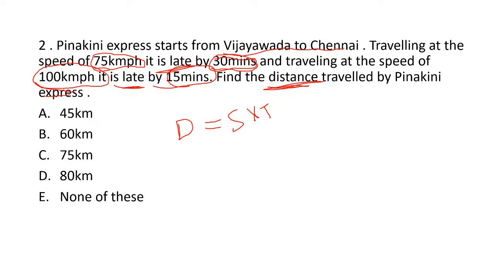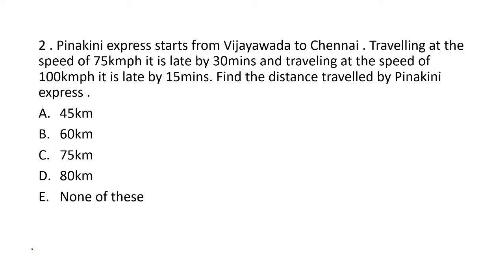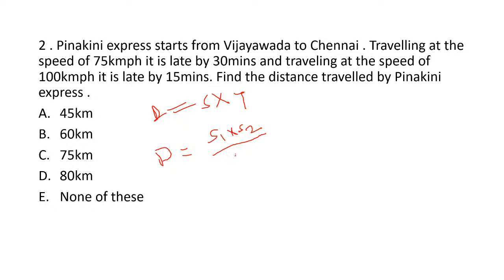We know distance equals speed into time. To solve this directly in one step, use the formula: D = (s1 × s2) / Δs × Δt, where Δs is the difference in speeds and Δt is the difference in time. S1 is 75, S2 is 100, and the speed difference is 100 minus 75 equals 25.